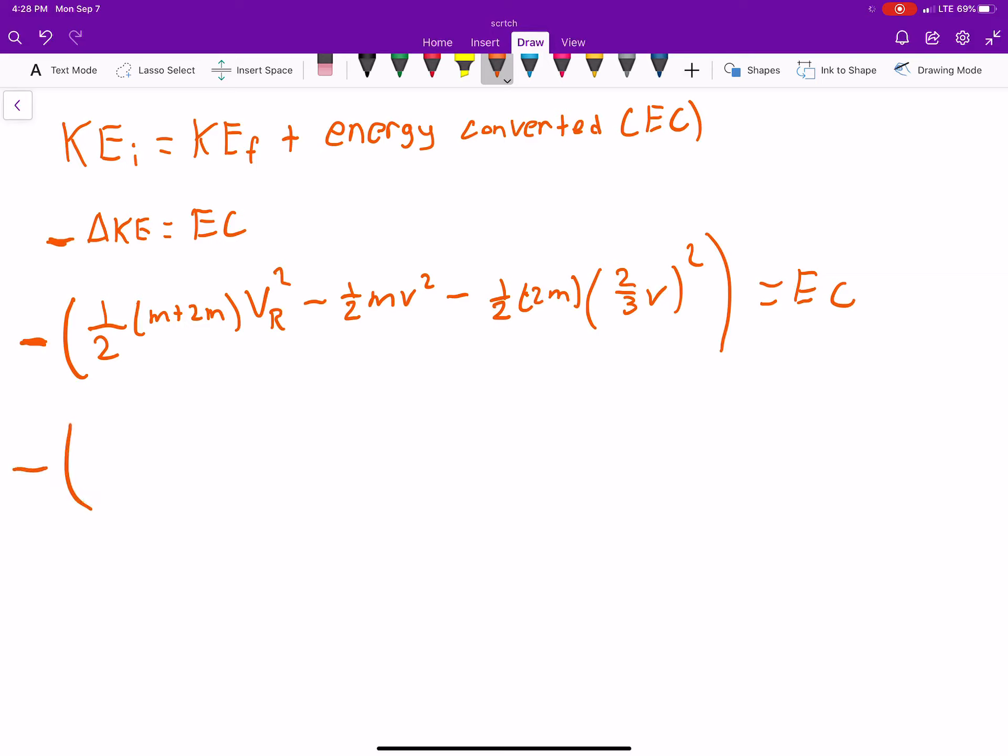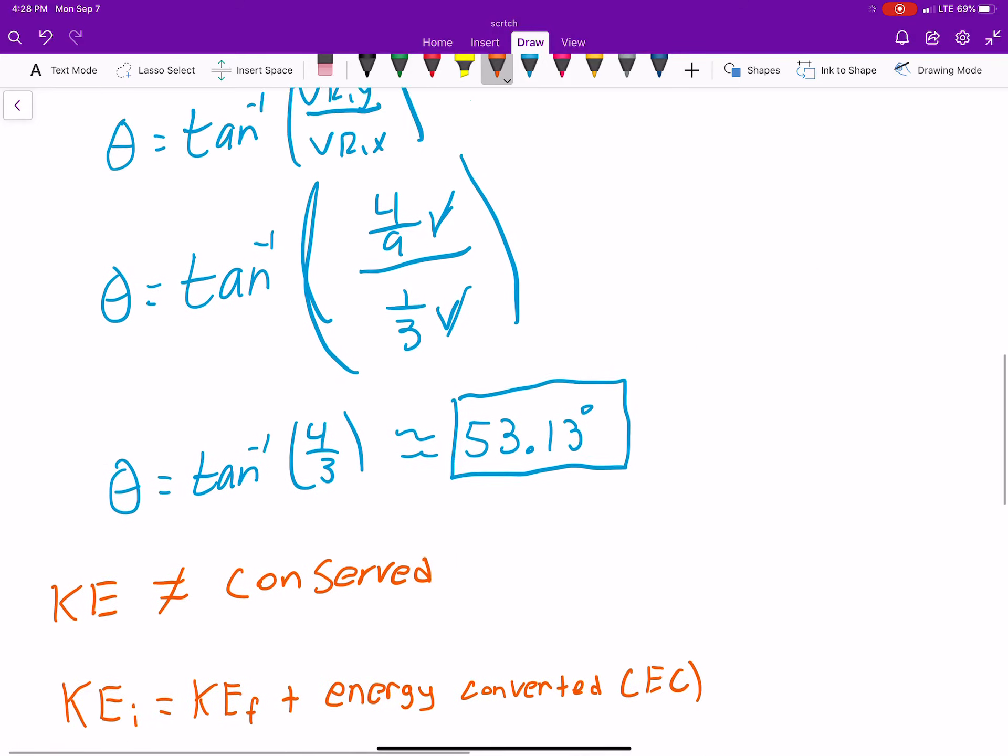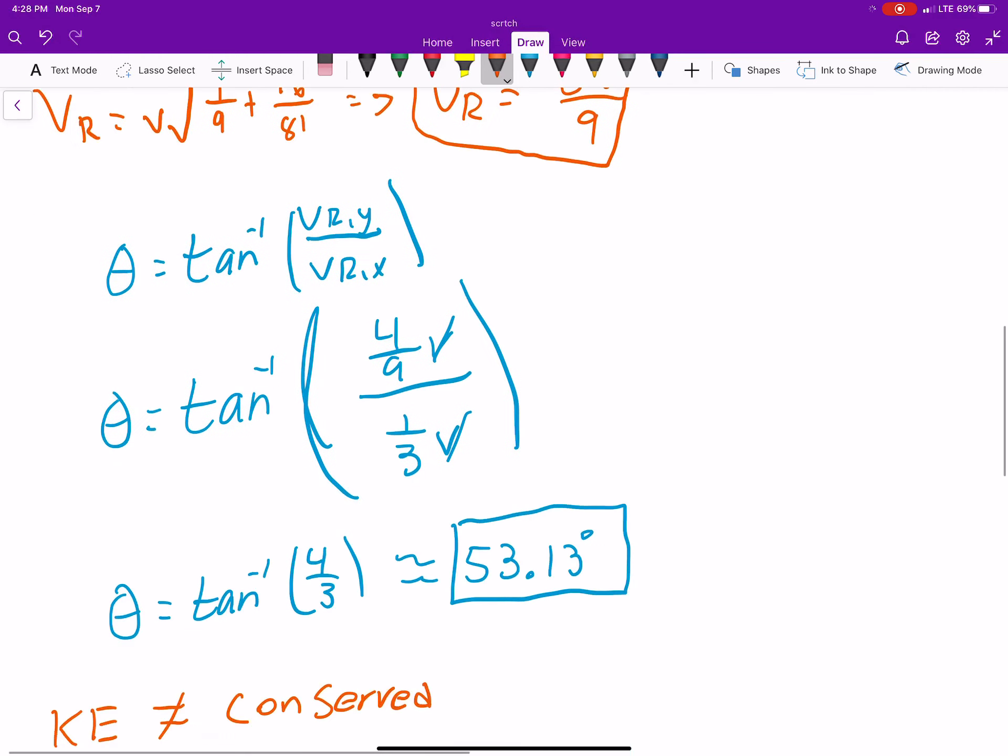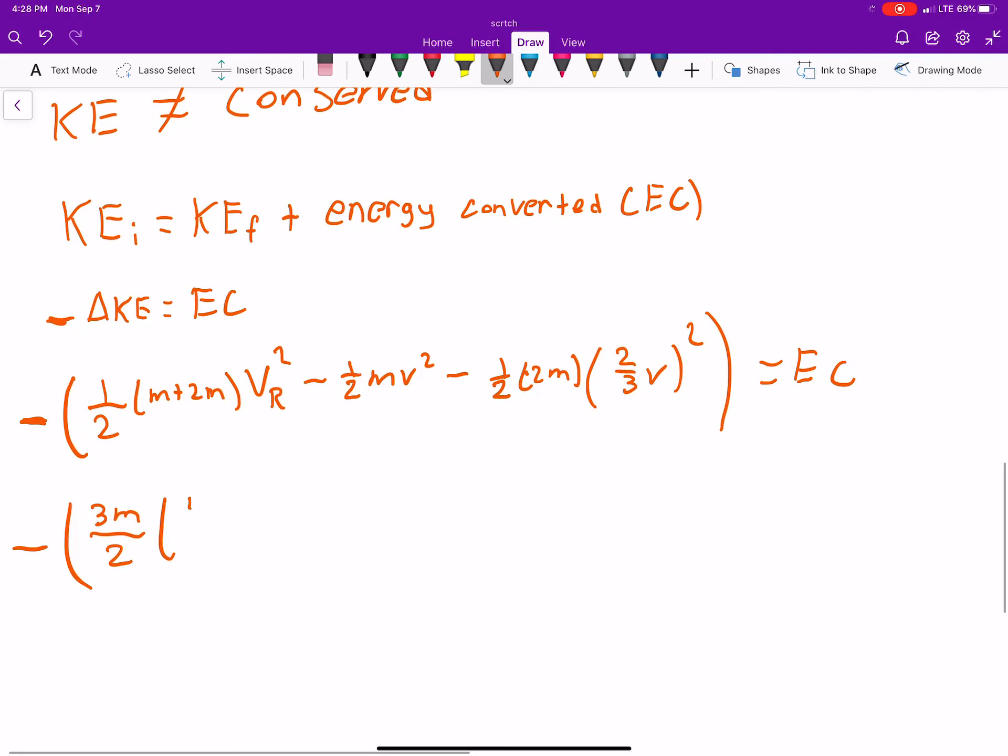So, negative, 3m over 2. The resulting velocity, which we solved for earlier, is 5/9 v. 5/9 v squared. Minus, 1/2 mv squared, nothing to see there. Minus, this two drops with this two.